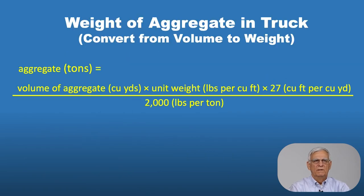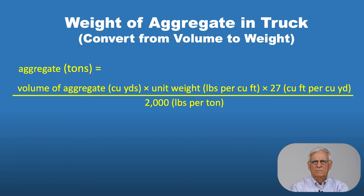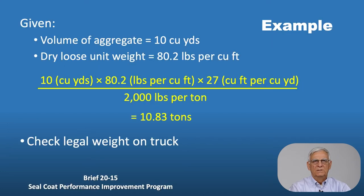We also have conversions to go from volumes of aggregates in a truck to tons. The equation is: volume of aggregate in cubic yards times the unit weight times 27, divided by 2,000 pounds per ton. For example, where we had 10 cubic yards of aggregate in a truck with a unit weight of 80.2 pounds per cubic foot, we substitute those numbers into the equation and end up with 10.83 tons. We can use this conversion to check the legal load limit on trucks.